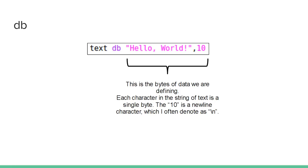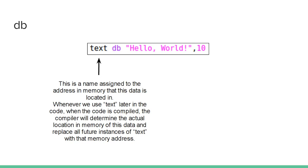And the 10 is a new line. You can't type a new line character, so I used comma 10 because the 10 is the value of the new line character, which I sometimes denote as backslash n. This is a name assigned to the address in memory that this data is located. Whenever we use text, since we've named it text, whenever we use text later in the code, when the code is compiled, the compiler will determine the actual location in memory and replace all future instances of text with the memory address. So we're basically putting a label on this memory address, and when it compiles, it replaces that label with the actual address.